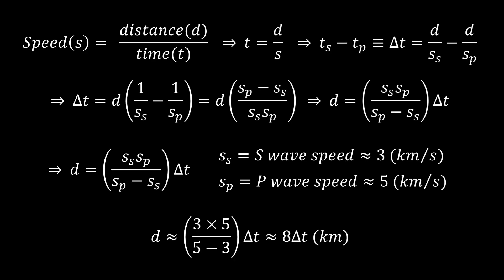If you want to see why that's the case, there's a derivation on screen. You start with the two speeds — 5 kilometers per second and 3 kilometers per second — and work through it from there.